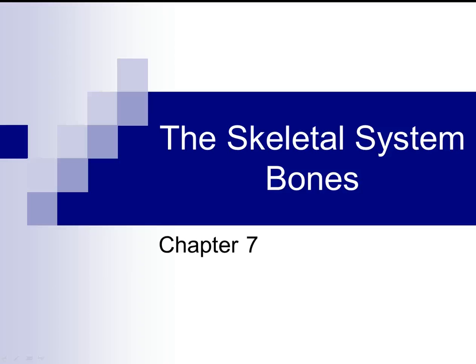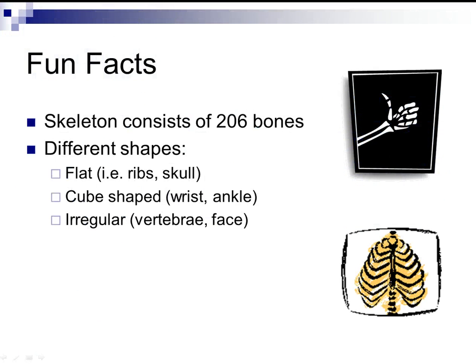Today we're going to talk about the skeletal system and your bones. Some fun facts: the skeleton consists of 206 bones in the average adult. There are different shaped bones — flat bones, cube-shaped bones, and irregular bones.